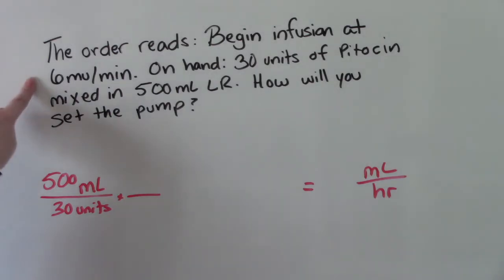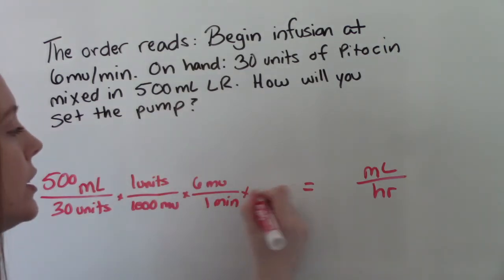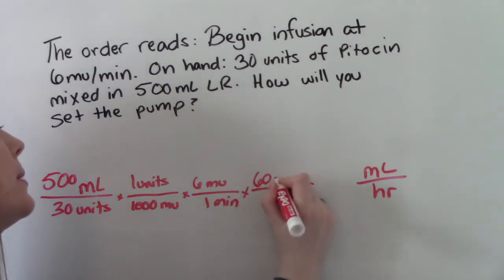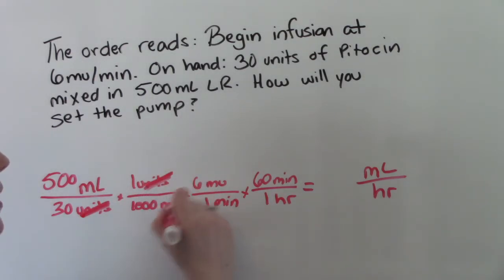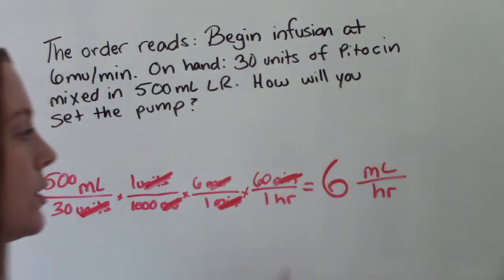What else do we know? We know we have 6 milli units per minute. So we need a converting factor. So one unit is 1000 milli units. And then we can do our 6 milli units per one minute. And the last thing, we want to have hours. So we need to convert hours and minutes. So 60 minutes in one hour. Now we can start canceling stuff. So units will cancel, milli units will cancel. Minutes will cancel. That will leave us with our mL in our numerator, hours in our denominator. You're going to multiply 500 times 1 times 6 times 60. And then divide that by 30 times 1000 times 1. And what you'll get? 6. So 6 mLs per hour.